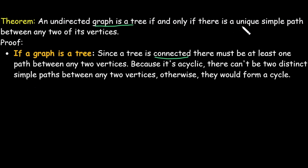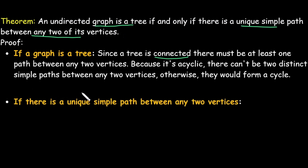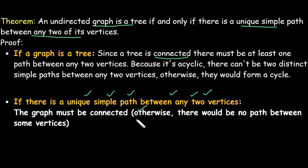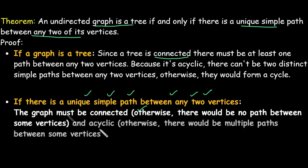On the other hand, suppose there is a unique simple path between any two vertices. We need to show that such a graph is a tree. If there exists a unique simple path between any two vertices, the graph must be connected because there is a path between every pair of vertices. Also, a unique simple path means the graph has no circuit — it is acyclic. A connected, undirected, acyclic graph is called a tree.